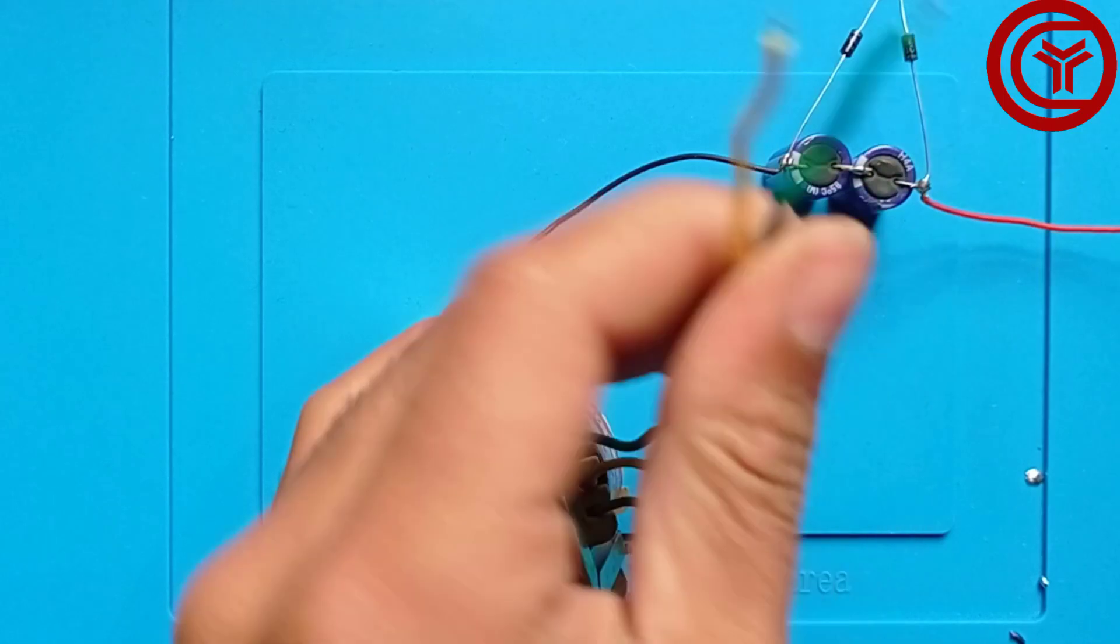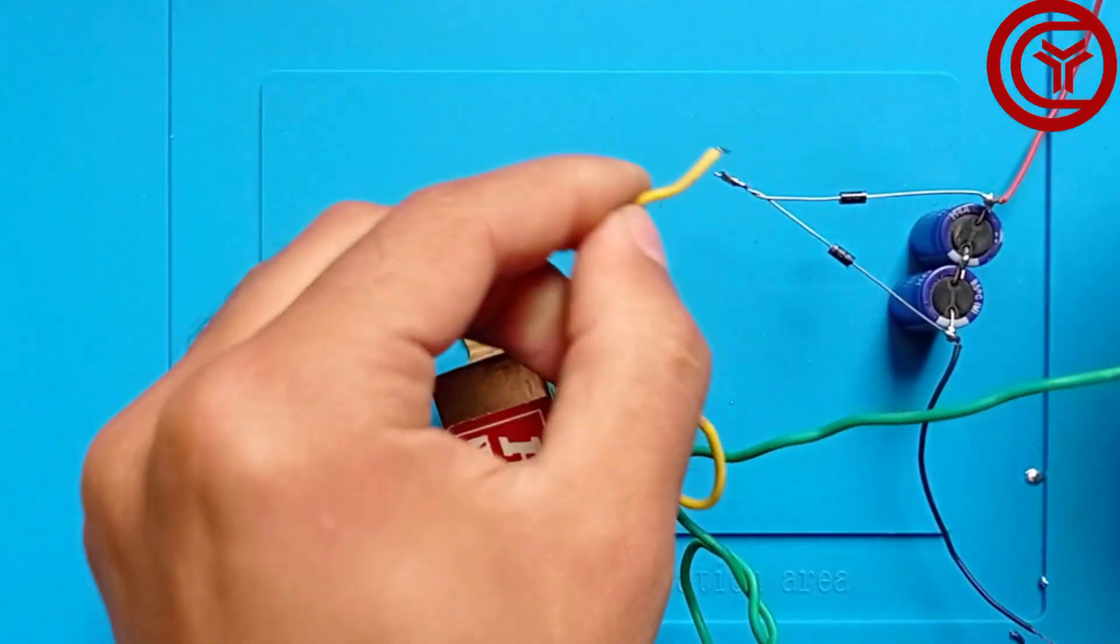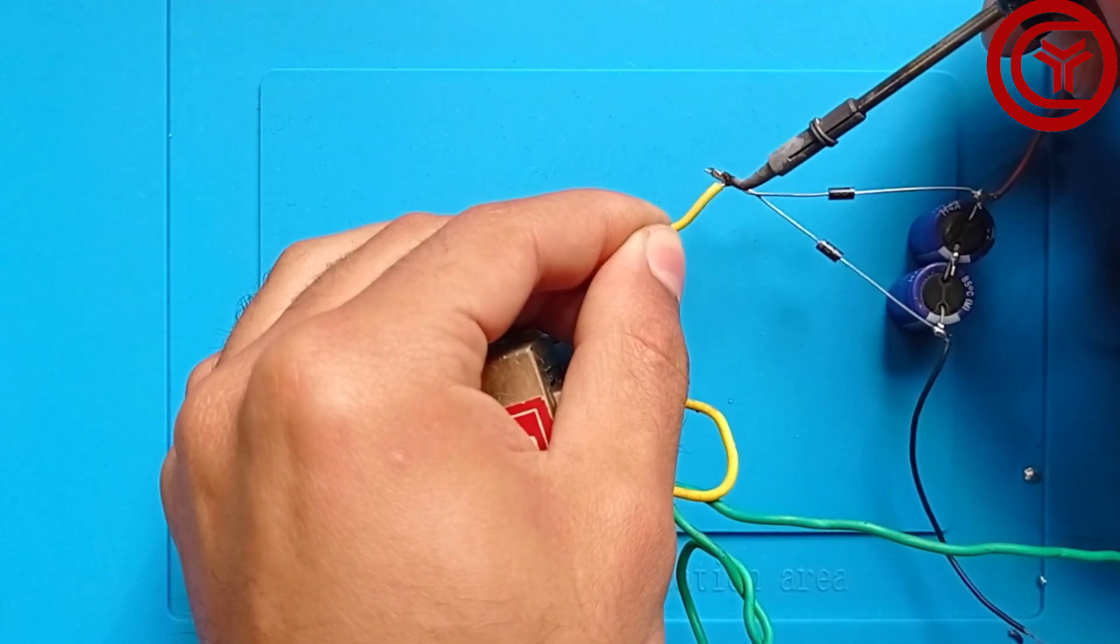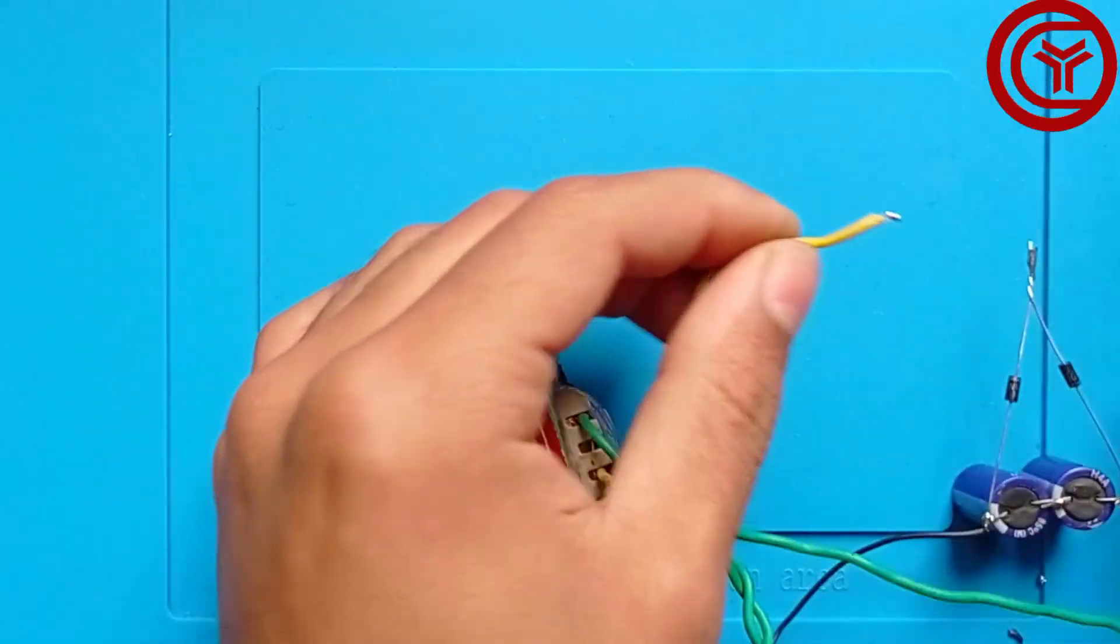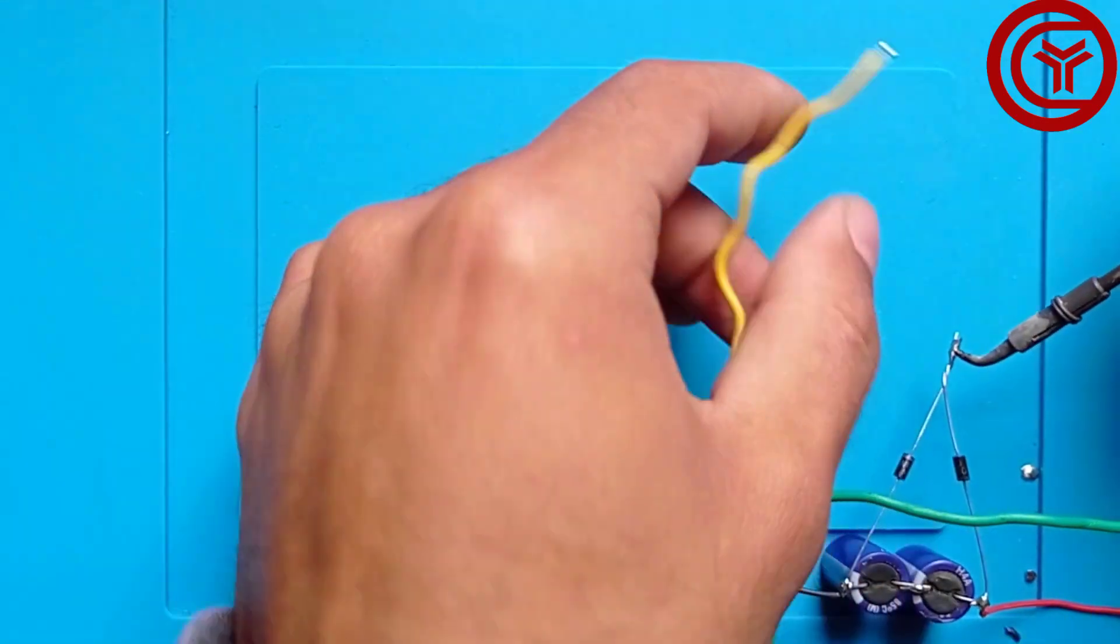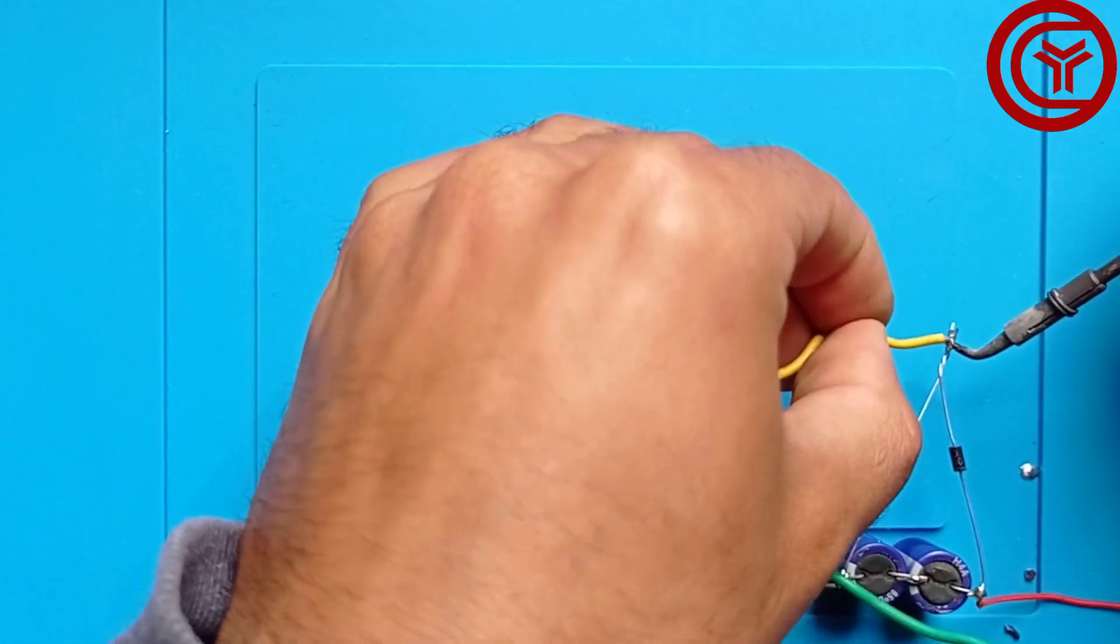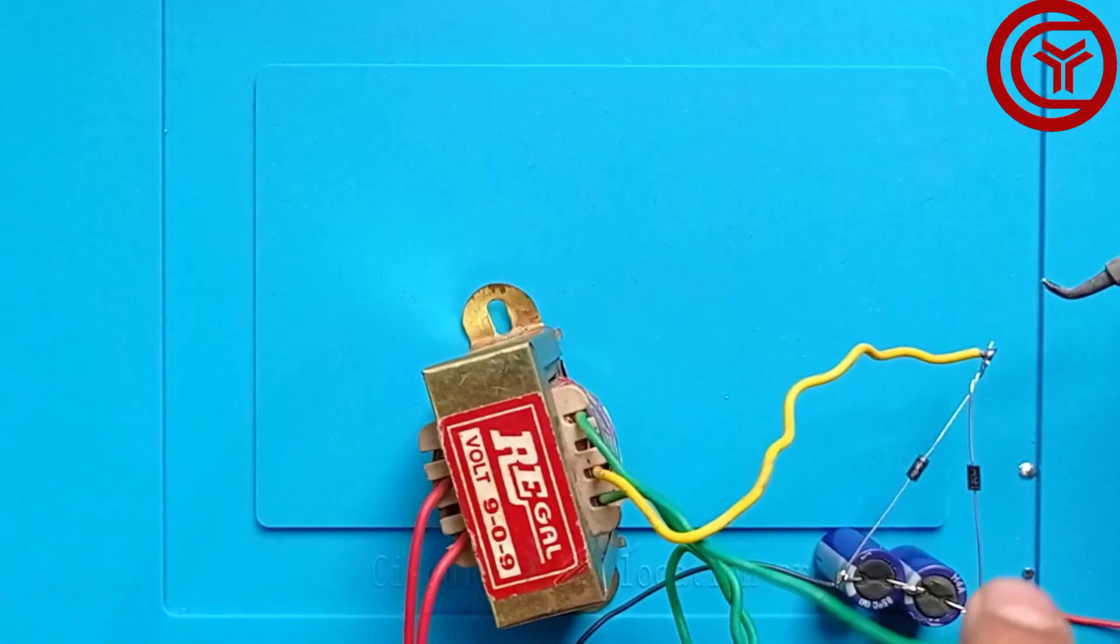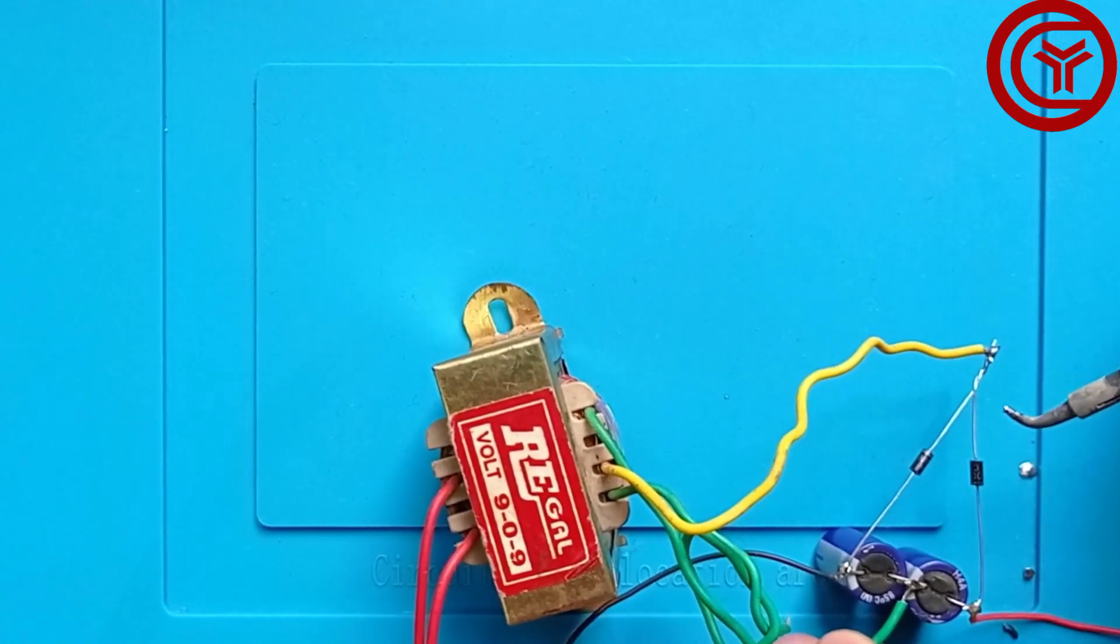Now we're connecting one wire with this point and another wire with the middle of these two capacitors.